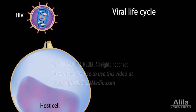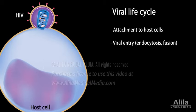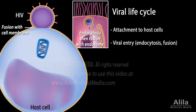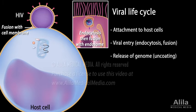A viral life cycle typically consists of the following steps: attachment to host cell receptor, followed by viral entry via endocytosis, membrane fusion, or both. Then release of the viral genome, also known as uncoating.